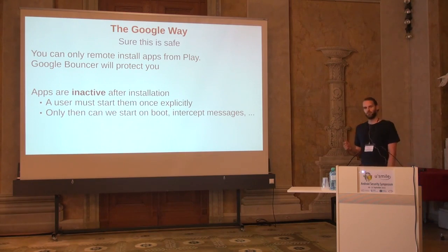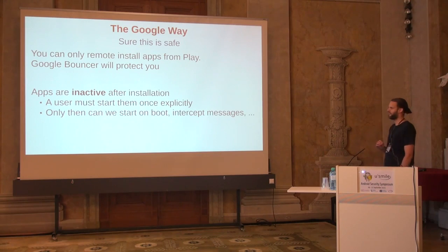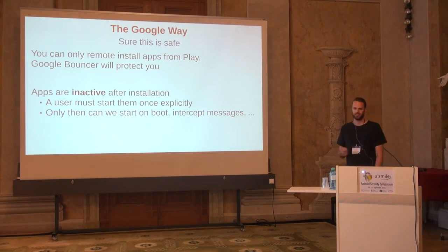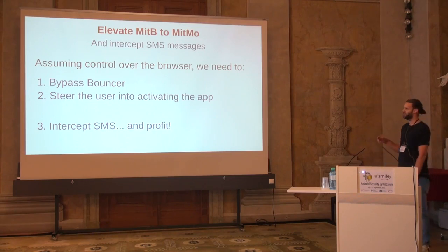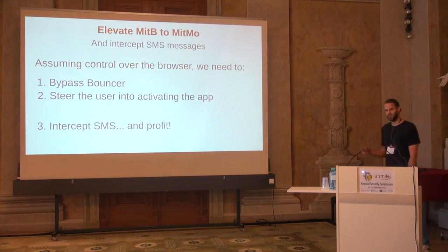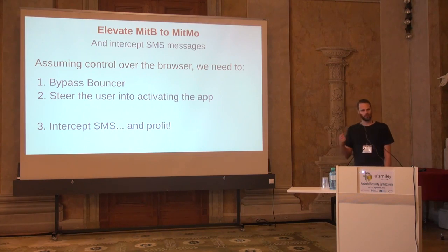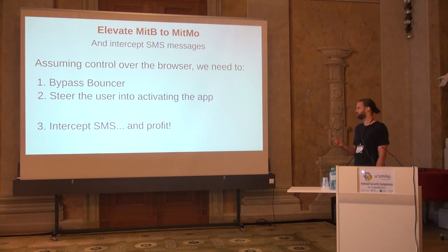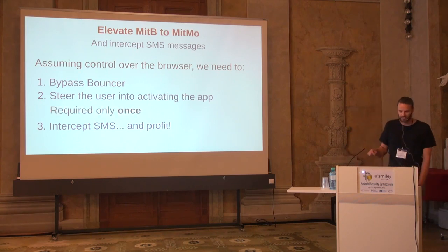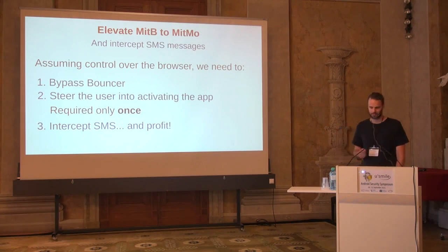Moreover, newly installed apps are inactive after installation — they cannot do anything out of the blue. A user must explicitly open the app at least once; only then can it start on boot, receive SMS messages, and do anything interesting. So to elevate a man-in-the-browser to a man-in-the-mobile attack, we need to do three things: bypass Bouncer, figure out a way to get the user to activate the app, and then intercept SMS messages. App activation is only required once — after that, even after a reboot, the app remains active.